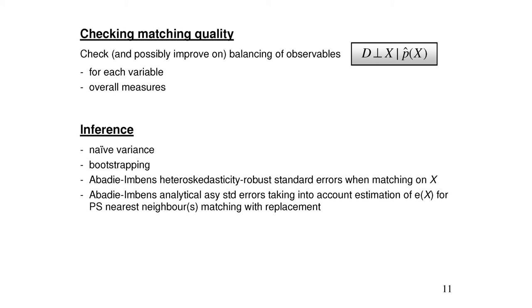On inference: this is still not completely settled in the literature. PSMatch2 displays a naive variance that ignores estimation of the propensity score in the first step. You can do bootstrapping, which takes that estimation into account. When matching on Mahalanobis, PSMatch2 displays heteroskedasticity-robust standard errors. Abadie and Imbens have written down the formula for analytical standard errors accounting for propensity score estimation, but it hasn't been implemented in software yet.